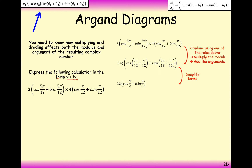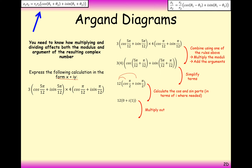The question wants the answer in x + yi form. Expanding the brackets: 12 × cos(π/2) = 12 × 0 = 0, and 12 × sin(π/2) = 12 × 1 = 12i. So the final answer is 12i. Quite a complex-looking question, but with a very simple answer.